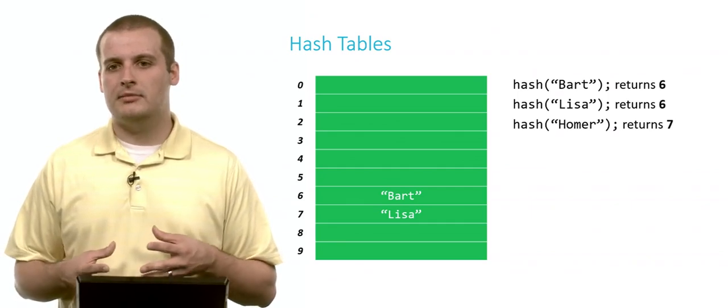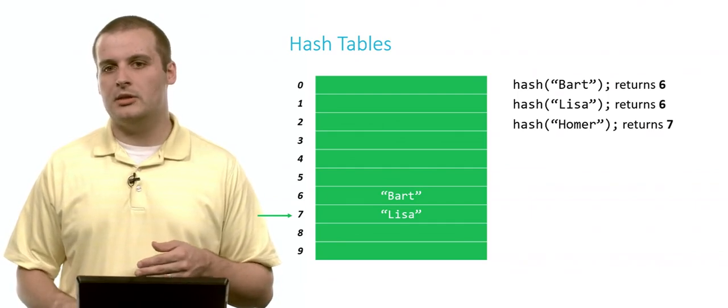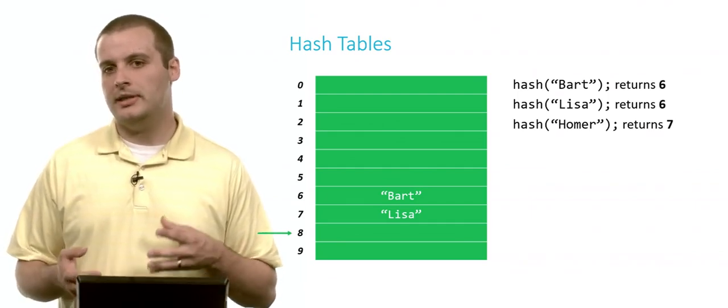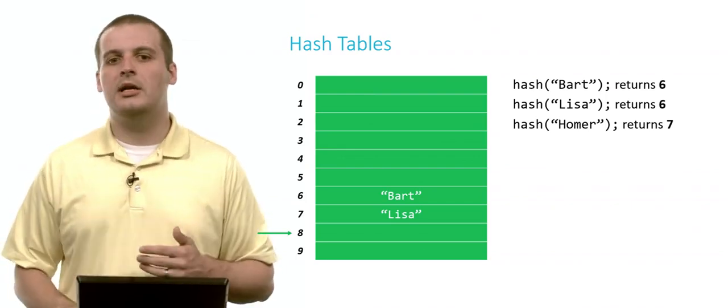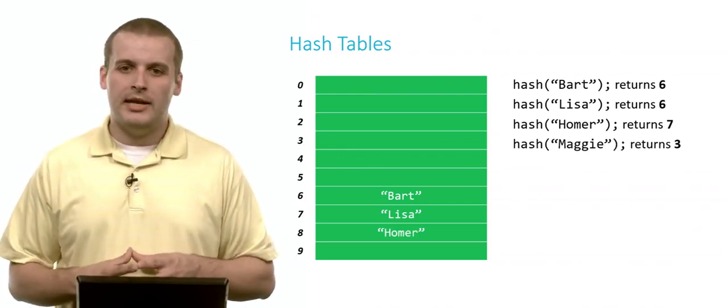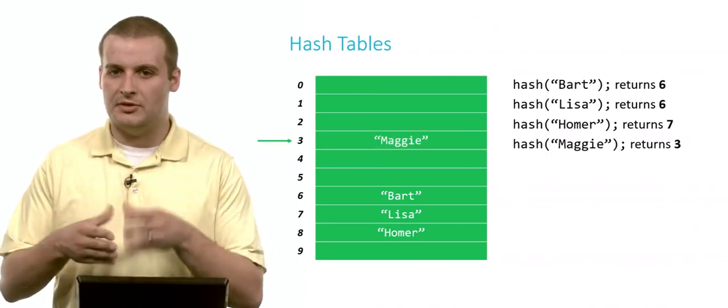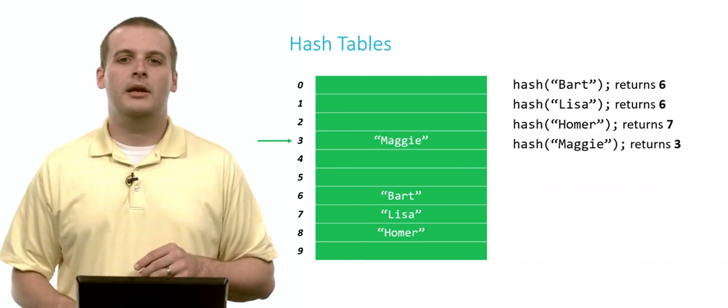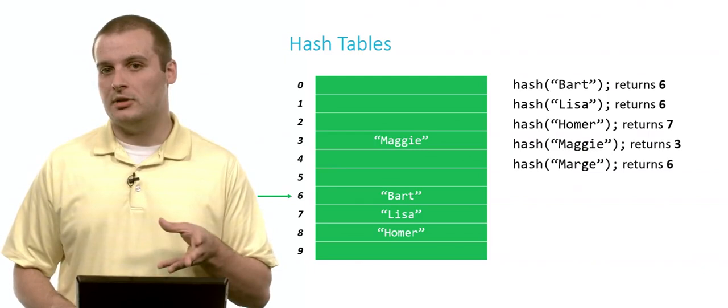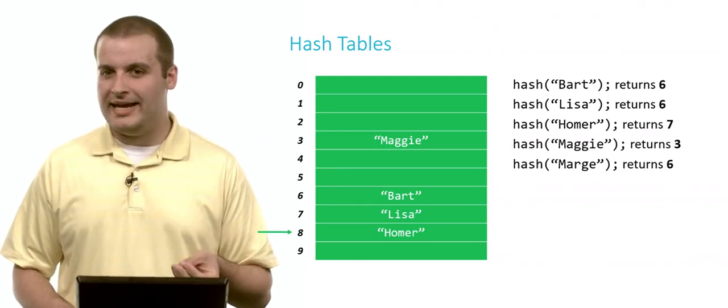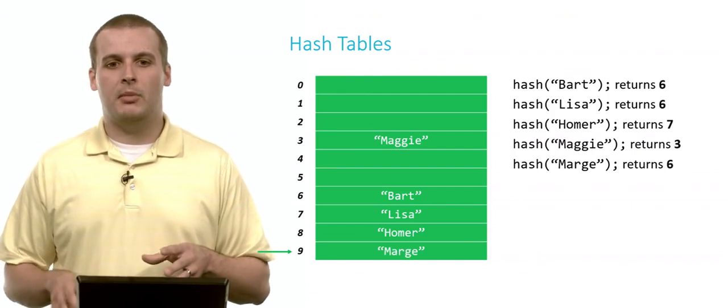Now we hash Homer. And we get 7. Well, we know that 7 is full now. So we can't put Homer there. So let's go to 8. Is 8 available? Yeah. And 8 is close to 7. So if we have to start searching, we're not going to have to go too far. And so let's put Homer at 8. Now we hash Maggie and returns 3. Thank goodness we're able to just put Maggie there. We don't have to do any sort of probing for that. Now we hash Marge. And Marge also returns 6. Well, 6 is full. 7 is full. 8 is full. 9. All right. Thank God. 9 is empty. I can put Marge at 9.